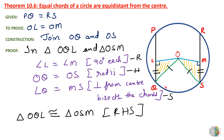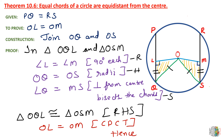Now we have proved that these two triangles are congruent triangles. So according to CPCT, we can say that OL is equal to OM. Therefore, OL is equal to OM by CPCT — hence proved. We have proved that these two chords are at equal distance from the center.